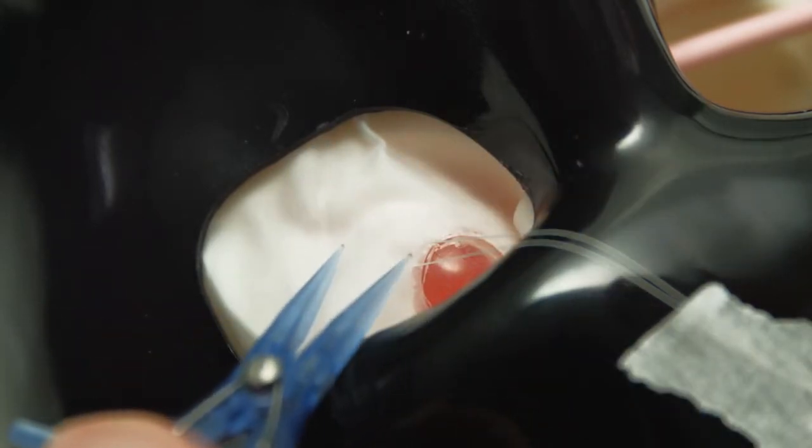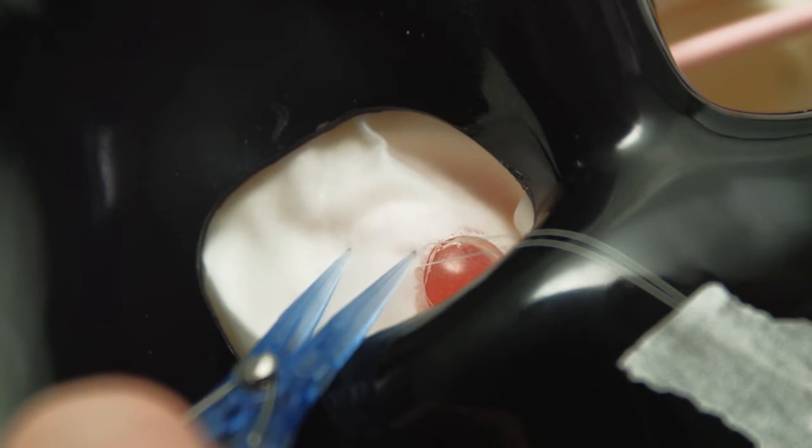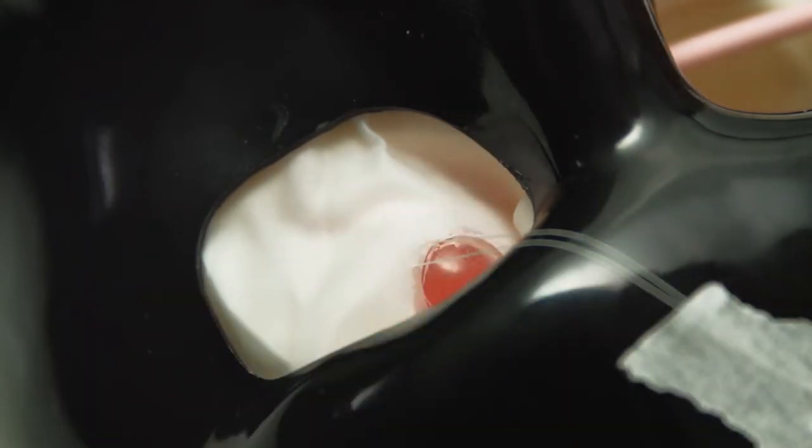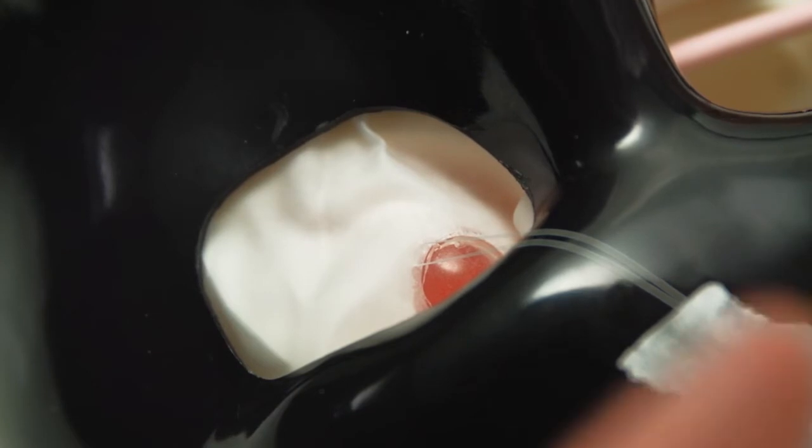Once trainees have mastered rectus muscle surgery, we move on to inferior bleak procedures. The eye is set up in exactly the same way as the advanced eye for rectus muscle surgery.